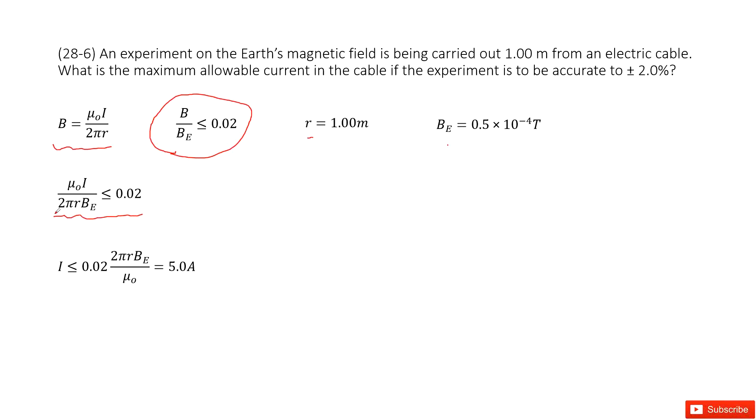And so we solve it. Simplify it. We can get the calculation term for the current. It is less than 5A. Okay. Thank you.